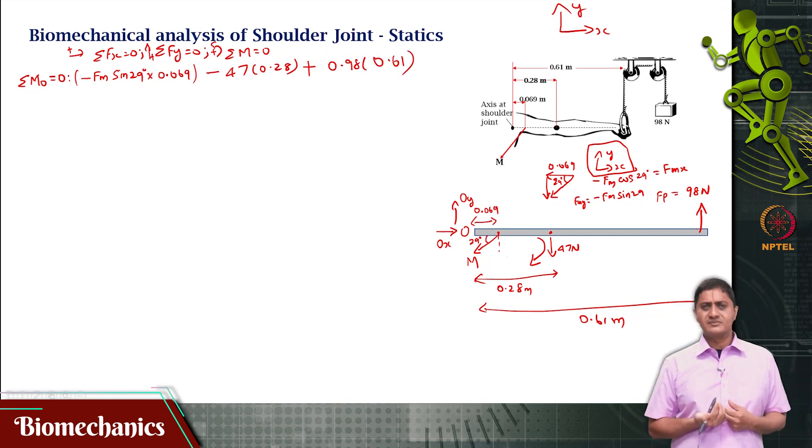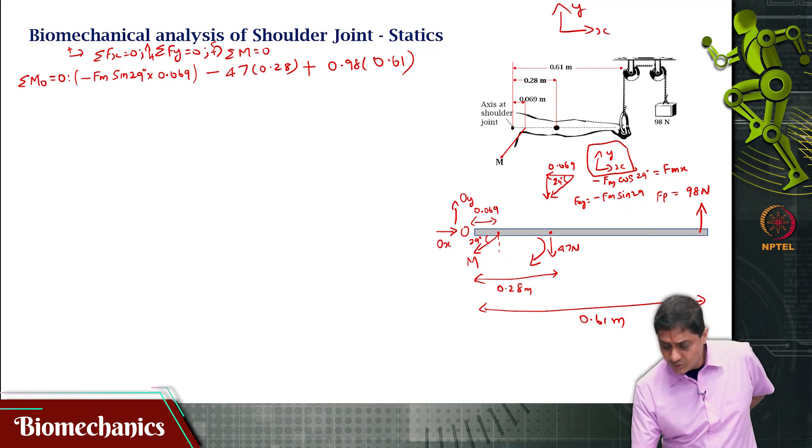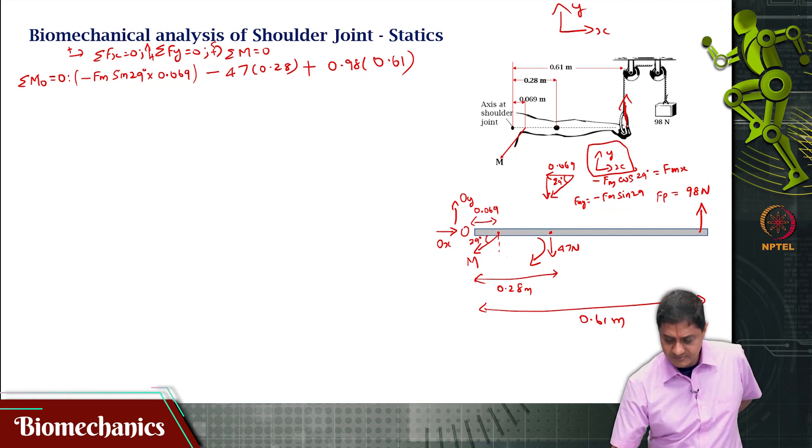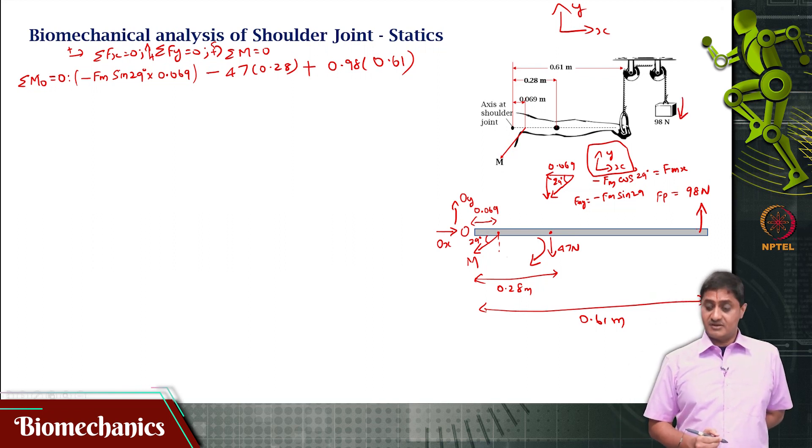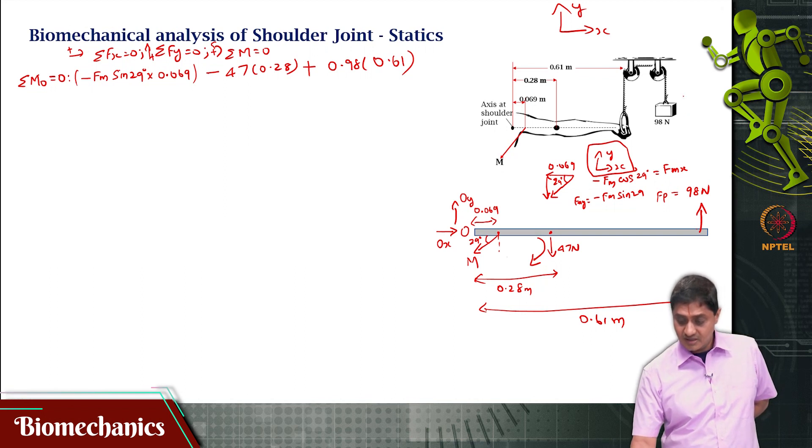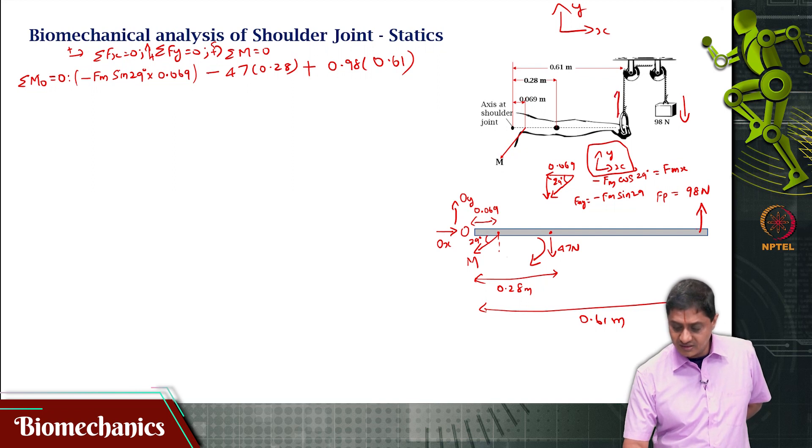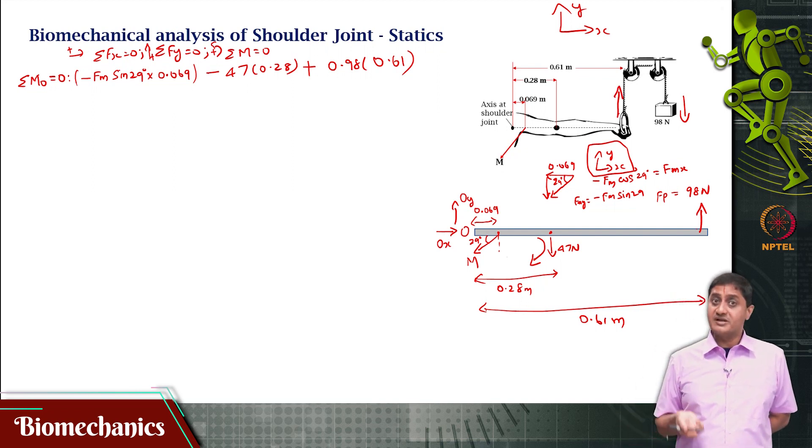Because this load is pulling the arm up like this, remember, because there is a pulley. Here is where the action of the pulley, here is where the action of the weight is downward, but for that person, because there is a pulley and rope involved, for this person, he will be feeling the load here upwards.